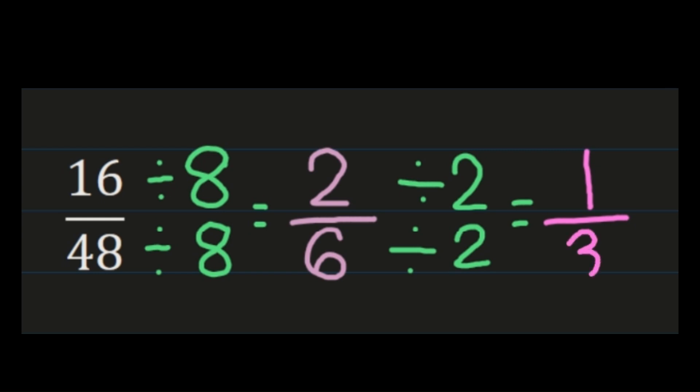I need to ask myself that last question, of course, is am I done simplifying? Well, one and three, I can't divide either one by anything but one. And so my simplified fraction, sixteen forty-eighths, simplifies to one-third.